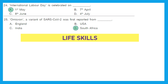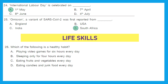Now we move to our third section: Life Skills. Question 26: Which of the following is a healthy habit? Option A — playing video games for six hours every day — no, it is harmful for our mental health, eyes, and physical health. Option B — sleeping only four hours every day — no, the minimum requirement is seven to eight hours. Option C — eating fruits and vegetables every day — yes, it is a healthy habit because they help fight diseases.